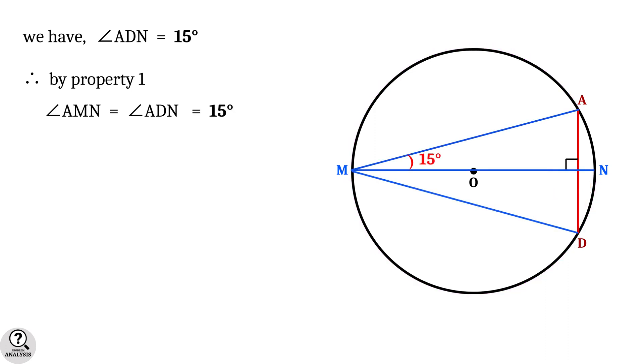Now draw the line DM. Due to the symmetry of the figure, we can conclude that angle DMN is also equal to 15 degrees.